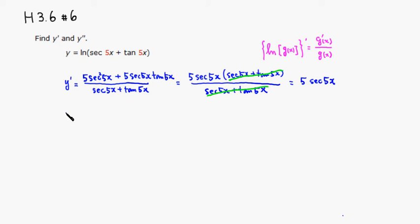So y'' would be - there's 5 already there. The derivative of secant is secant tangent, so secant 5x times tangent 5x. Then, by the chain rule, multiply by the derivative of the inside function. The derivative of 5x is 5.